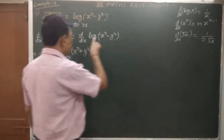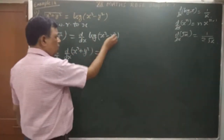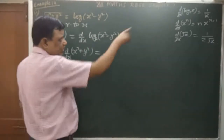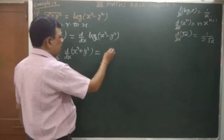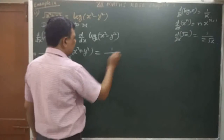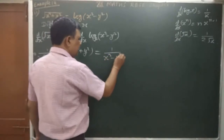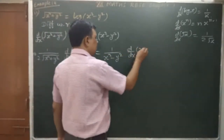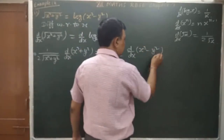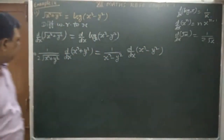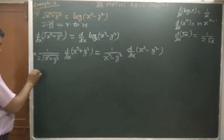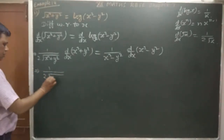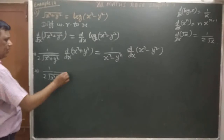For the log side, log x differentiates to 1 upon x, so the derivative of log(x² - y²) gives 1 upon (x² - y²), and the value of x is carried through.